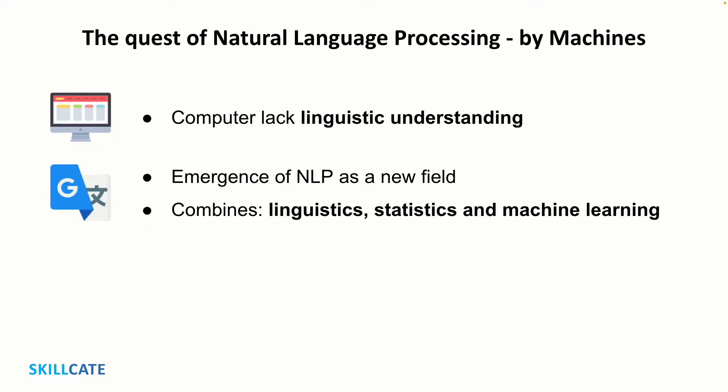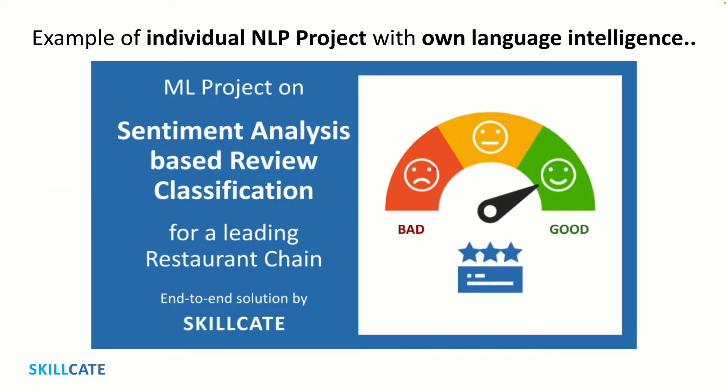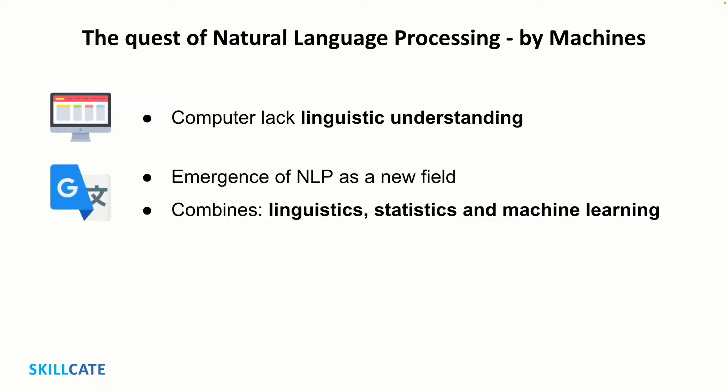Over the years, individual NLP tasks were solved by individual models created for each specific task. For example, a sentiment analysis project is a completely independent model having its own intelligence to understand language and predict the sentiment, as there was no way to borrow language understanding from some external source and transfer it for our use case. And this changed with the arrival of BERT.